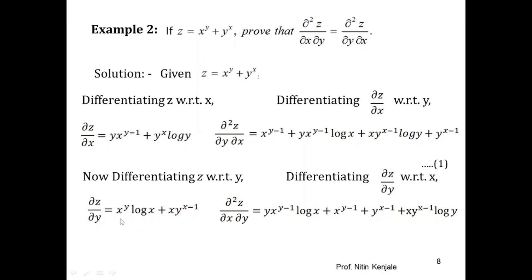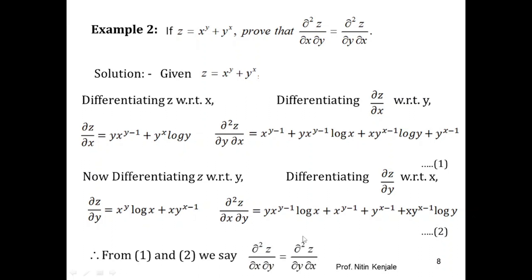Note that we applied the product rule to differentiate x^y·log x. Similarly applying the product rule to differentiate x·y^(x−1): keeping y^(x−1) as it is, derivative of x is 1, giving y^(x−1); plus keeping x as it is, derivative of y^(x−1) is y^(x−1)·log y. Observing that the right-hand sides of both expressions are the same, we conclude ∂²z/∂y∂x = ∂²z/∂x∂y. Hence proved.